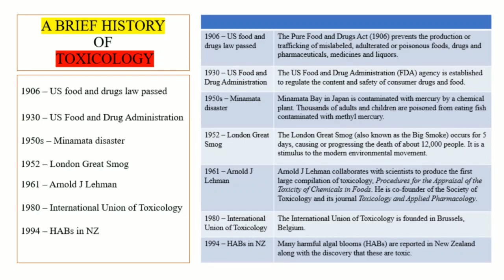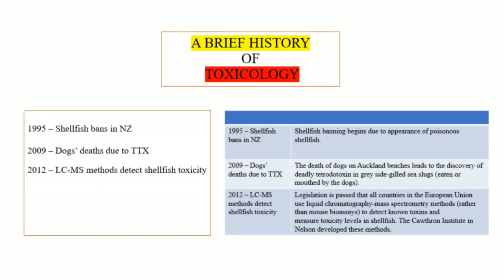In 1994, harmful algal blooms (HABs) were reported in New Zealand and found to be toxic. In 1995, New Zealand discovered that some shellfish were poisonous and banned the sale of poisonous shellfish. In 2009, dogs died on Auckland beaches; investigation revealed the cause was tetrodotoxin (TTX) from the consumption of grey side-gilled sea slugs that the dogs had eaten.